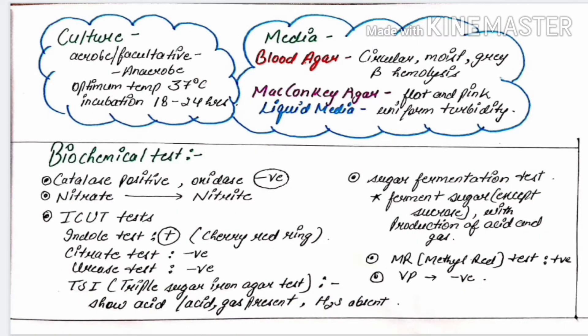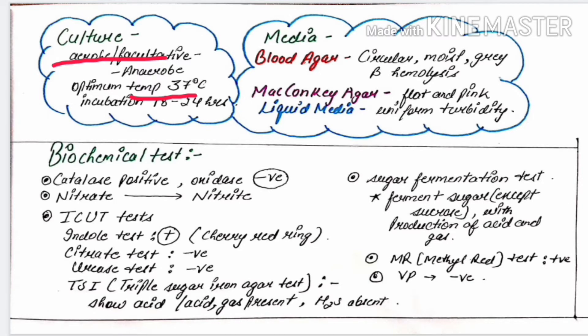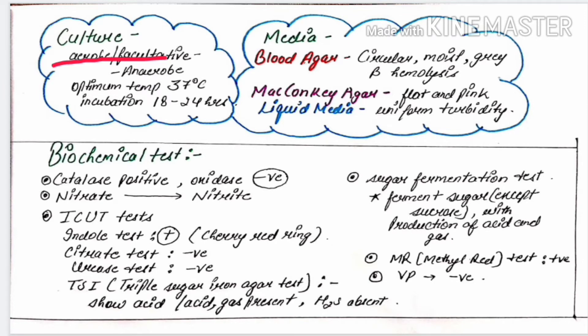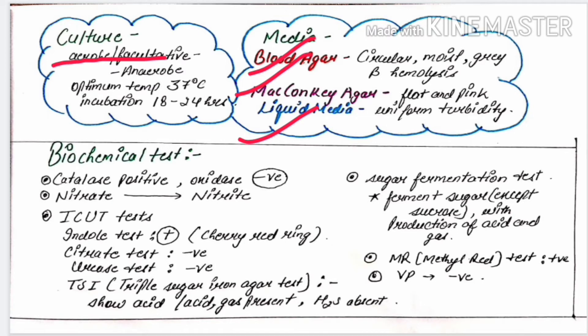Next thing is culture media and biochemical test. E.coli is aerobic as well as facultative anaerobic. It can grow at 37 degrees Celsius, and its temperature varies from 10 degrees Celsius to 40 degrees Celsius. Incubation period is 18 to 24 hours. The media that we can use to isolate E.coli are blood agar, MacConkey agar, and liquid medium. In blood agar, we can see circular moist grey colonies and beta hemolysis is also produced.